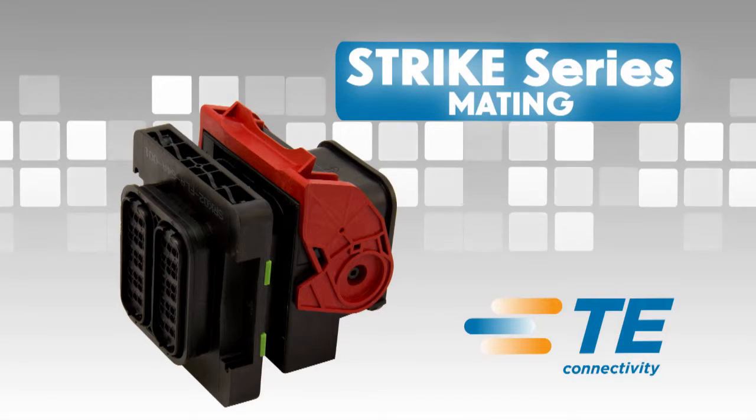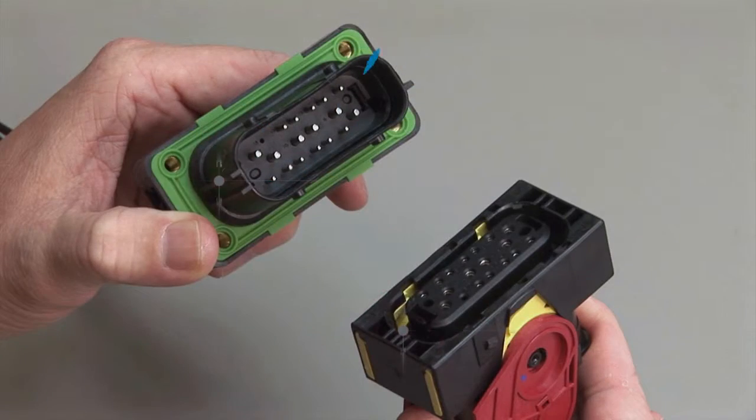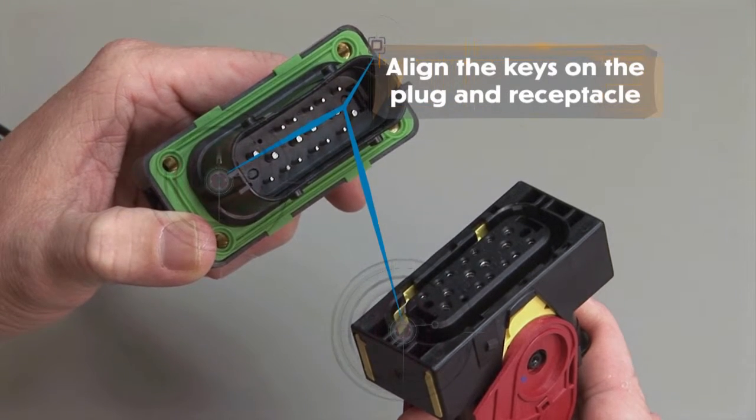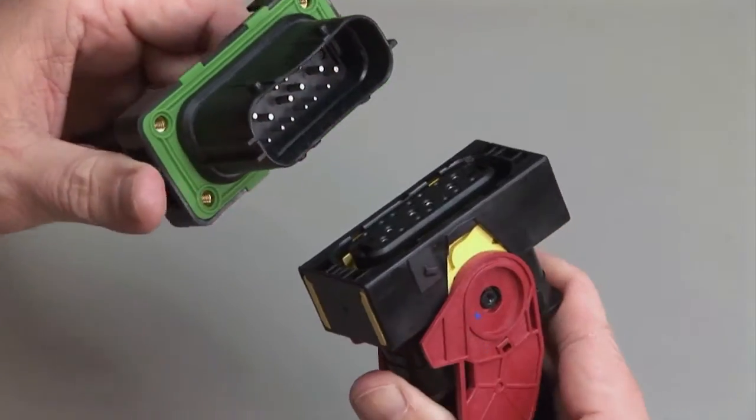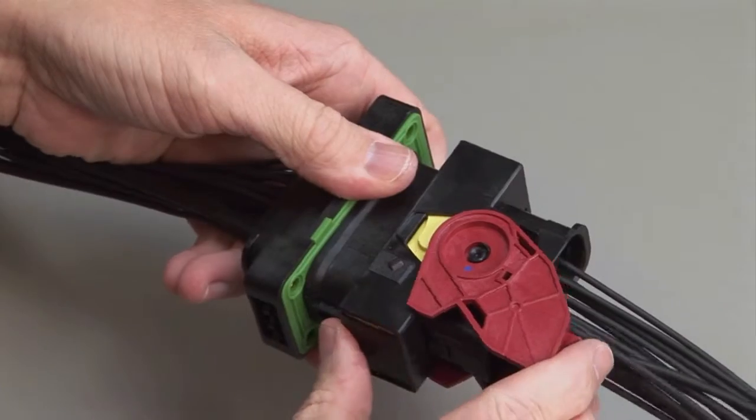Strike Mating. All strike connectors are designed to be mated and unmated by hand. Align the keys in the plug and the receptacle halves. Push the two parts together and pull the lever lock on the plug until you hear and feel a click.